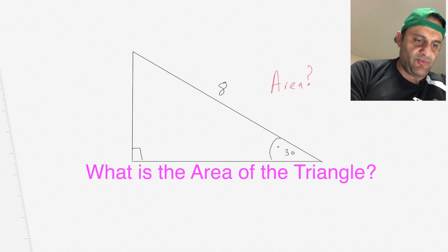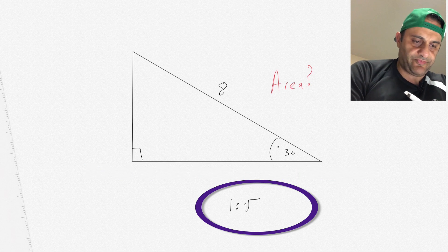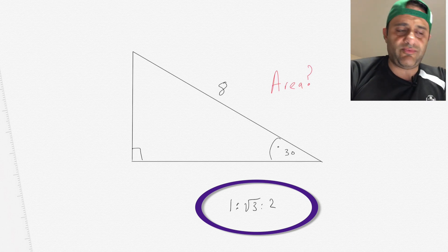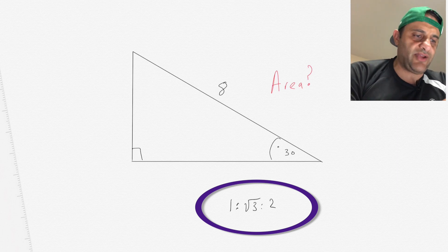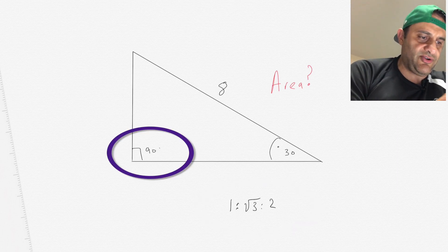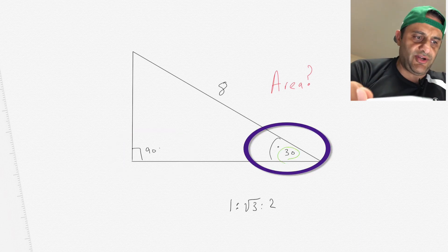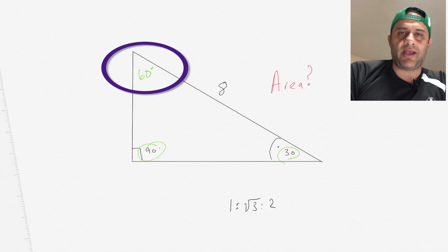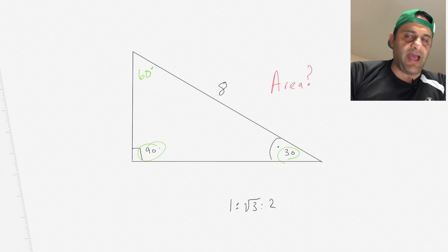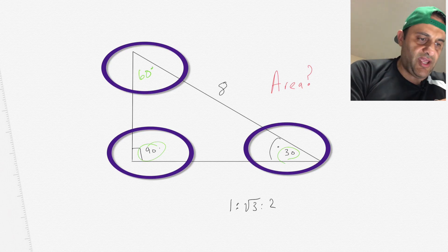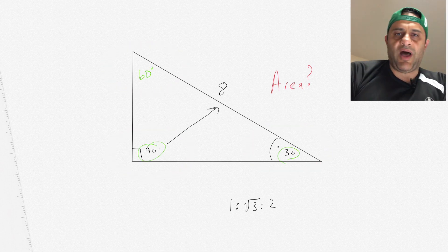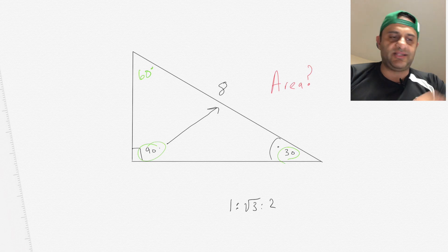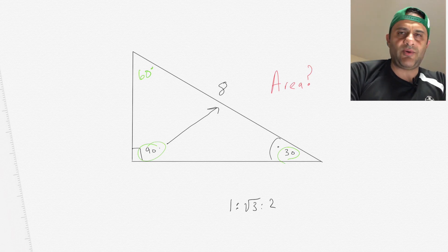What is very important to note is this ratio: with a 30-60-90 triangle it goes 1, square root of 3, 2. The hypotenuse is always the longest side because the 90-degree angle is the widest angle and it opposes the hypotenuse. The angles must add up to 180, so if you have 30 and 90, that leaves 60 degrees.